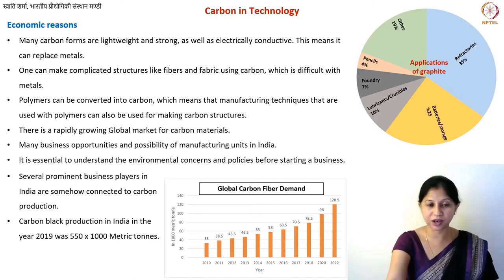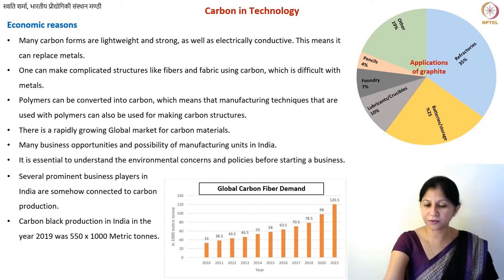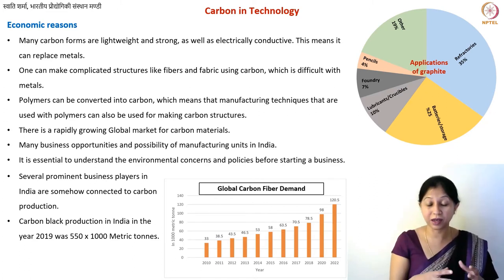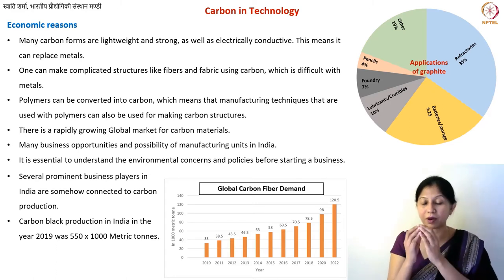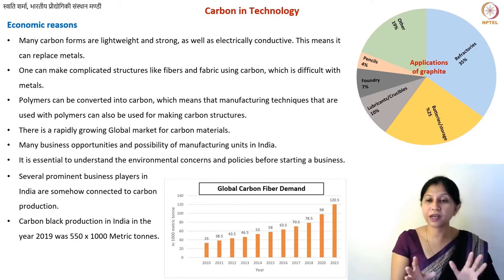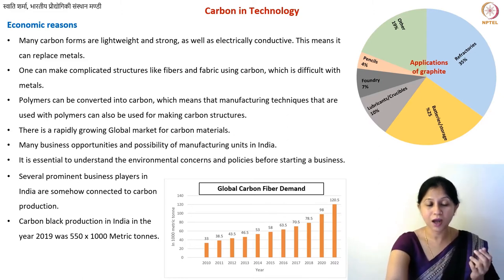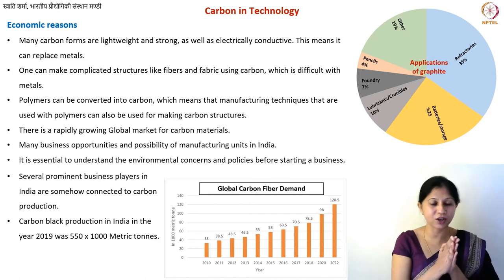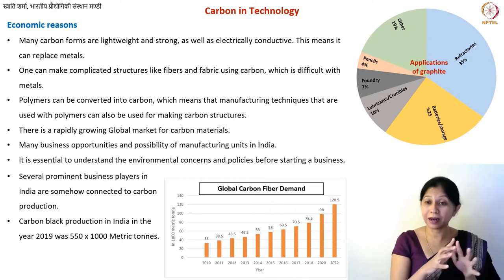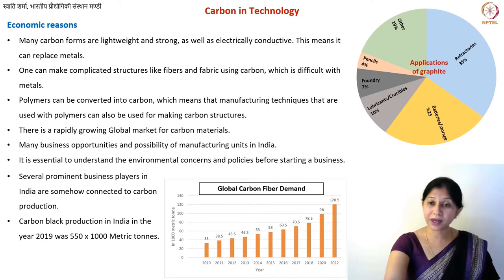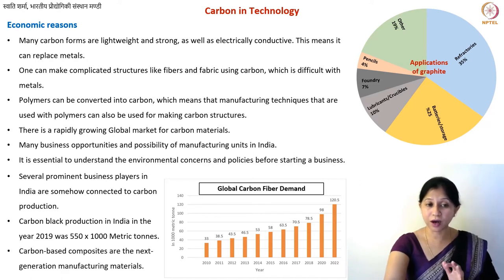There are some numbers — you can do your own internet search — but the point is that many different carbon materials are being produced in India and around the world. Some countries produce more carbon black, some more graphite-like carbon, some more glass-like carbon. The numbers are large and rapidly growing. One more thing: carbon-based composites. Aerospace applications and car manufacturing are utilizing carbon-based composites rather than direct carbon materials.